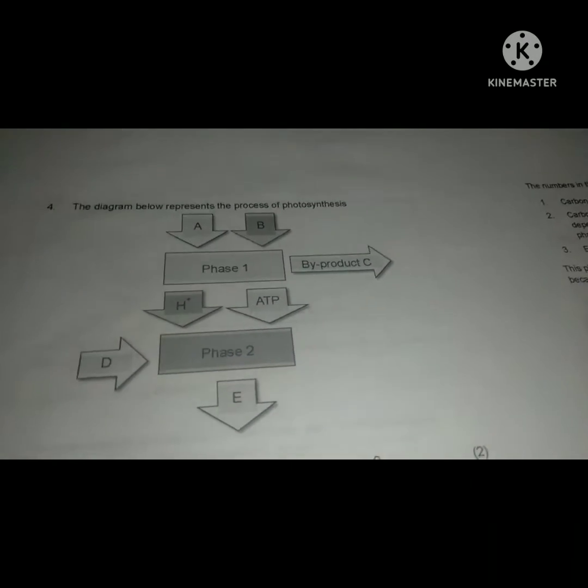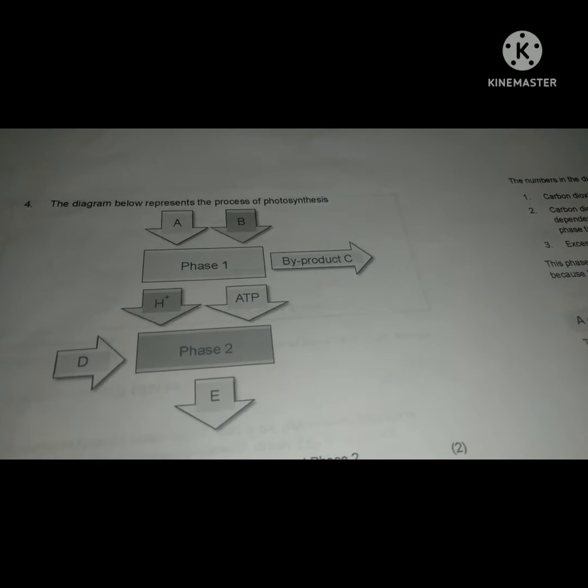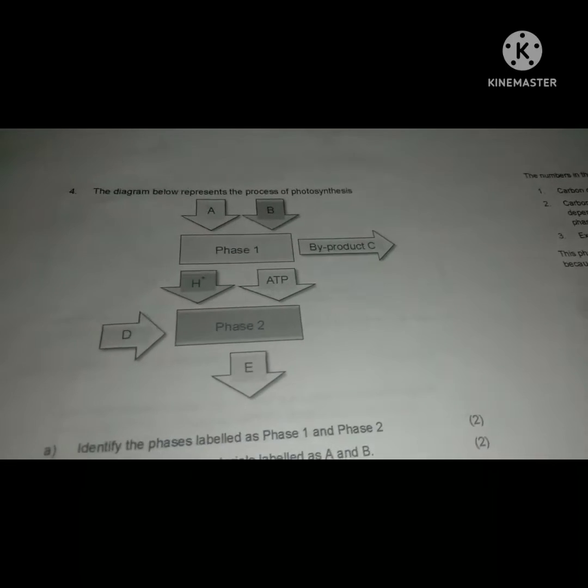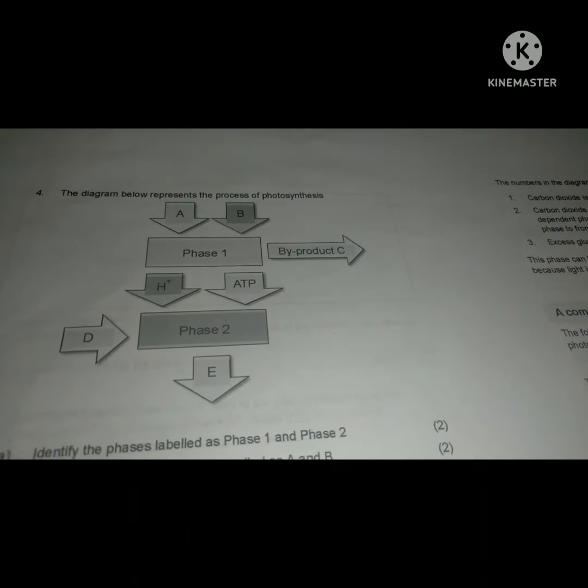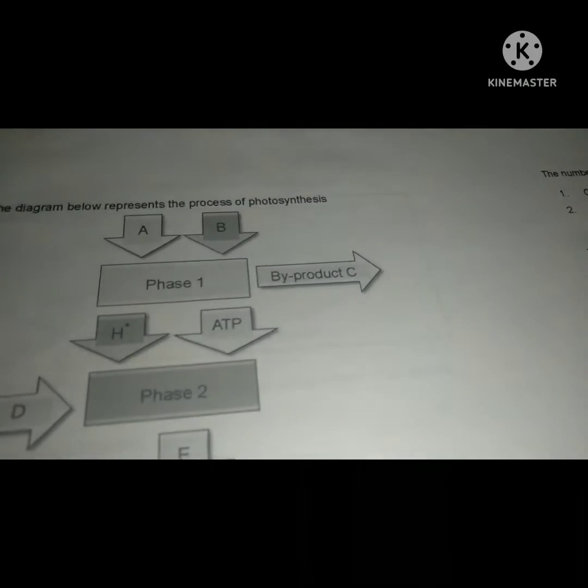Let us try to identify what is A, B, phase 1, byproduct C, D, E, and phase 2. So let's look at the question: identify the phases labeled as phase 1 and 2. Phase 1 is the light phase.